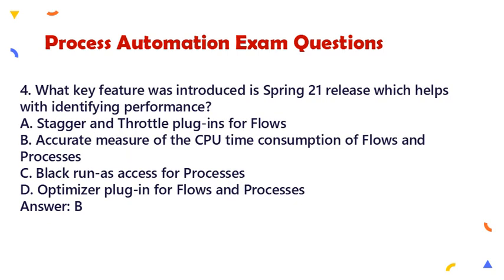Question 4: What key feature was introduced in the Spring 21 Release which helps with identifying performance? a. Stagger and Throttle Plugins for Flows, b. Accurate Measure of the CPU Time Consumption of Flows and Processes, c. Black Run as Access for Processes, d. Optimizer Plugin for Flows and Processes. Answer: b.